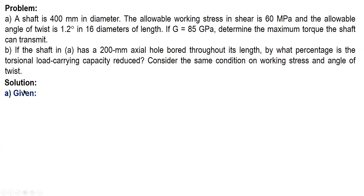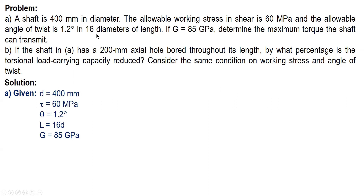For letter A, given: diameter is 400 mm, shear stress is 60 MPa, angle of twist is 1.2 degrees. The length is 16 diameters, so we multiply 16 by 400 to get the length of the shaft. What is required is the maximum torque. There are two criteria to check.